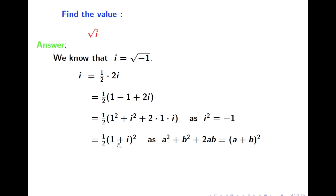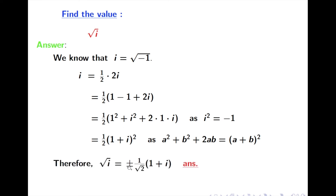So we write it as (1 + i)², giving us i = (1/2) times (1 + i)². We have now expressed i as the square of a number. Taking the square root on both sides, we get: square root of i equals plus or minus (1 + i) divided by root 2. This is the expected answer.